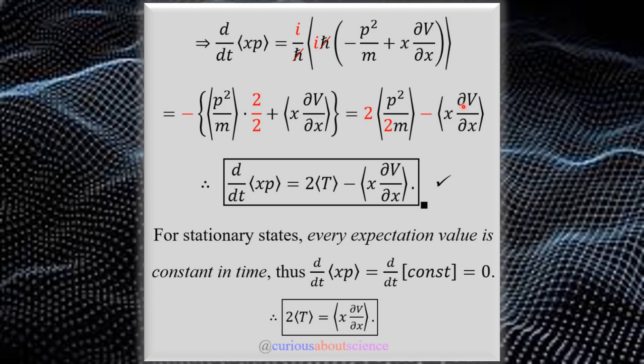We get x, dV, dx. So we conclude now that d/dt of the expectation of x and p is equal to twice the kinetic expectation minus x ∂V/∂x, where V is the potential, of course.